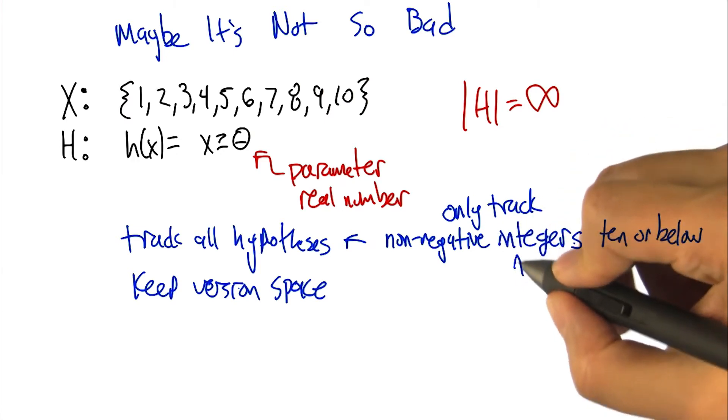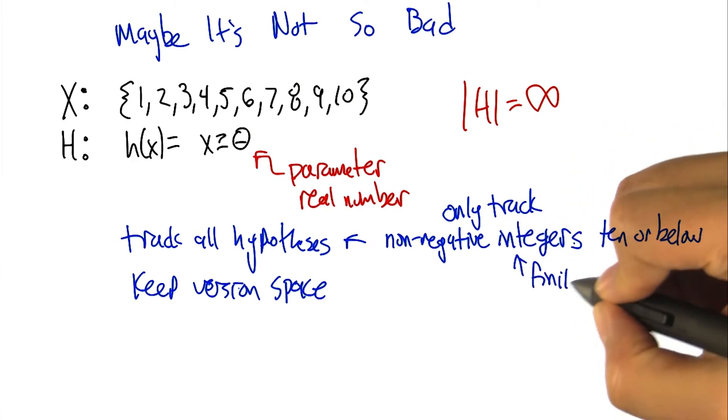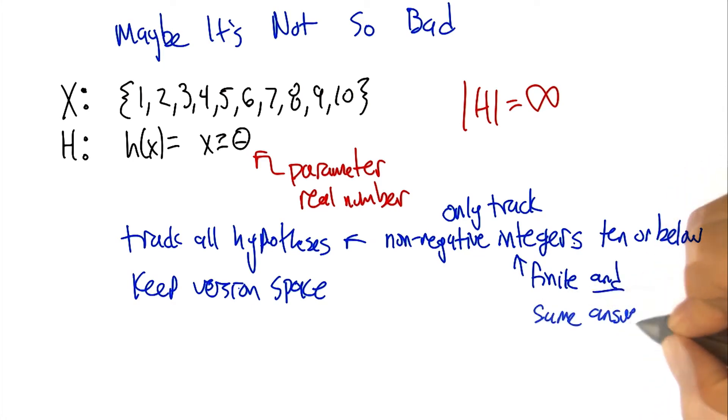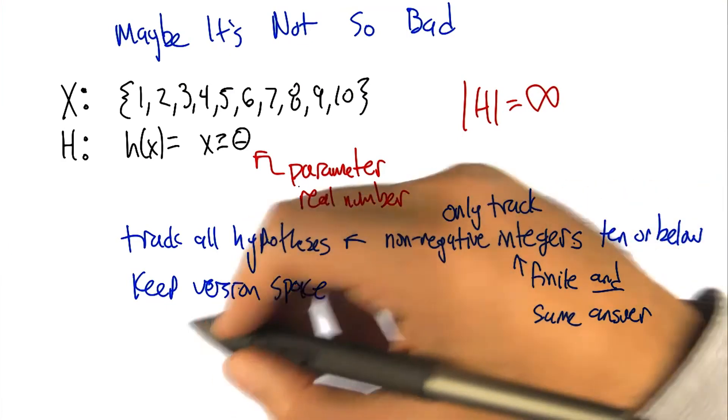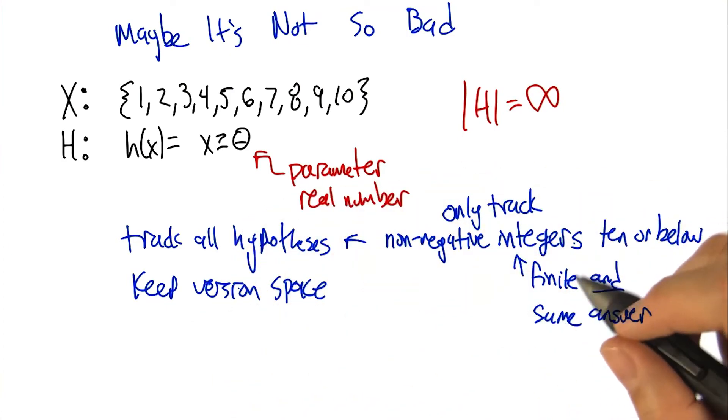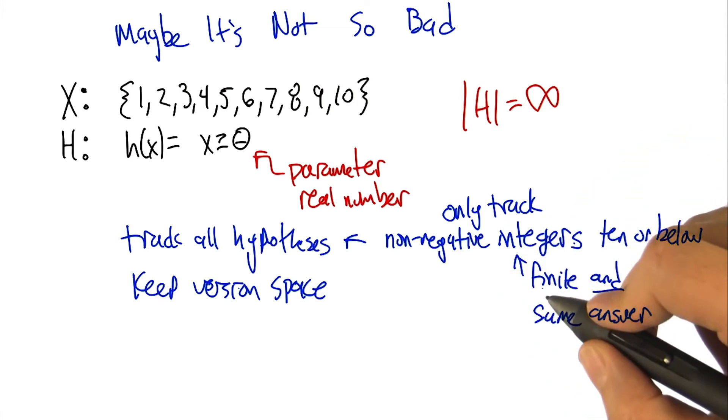This would be finite, and it gives us the same answer as if we had actually tracked the infinite hypothesis space. So, there's kind of, well, I don't know, you had a good way of saying it before. Do you want to say it again? What is the difference between kind of this hypothesis space that we're working with, and the hypothesis space as we defined it?